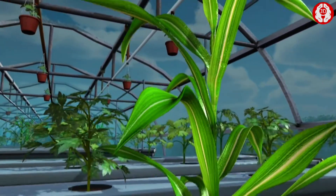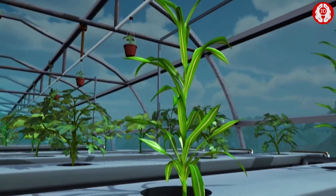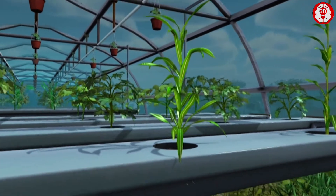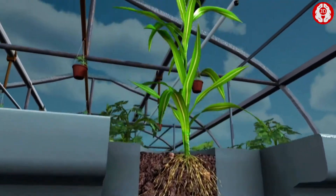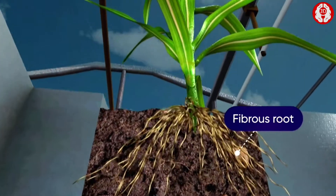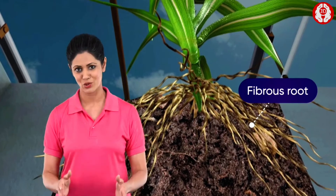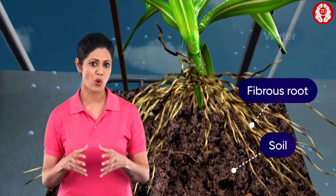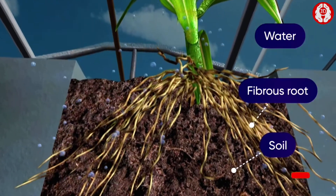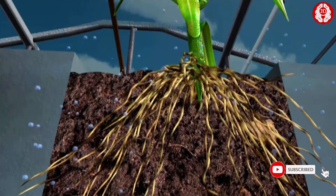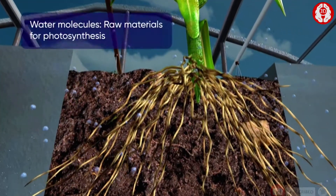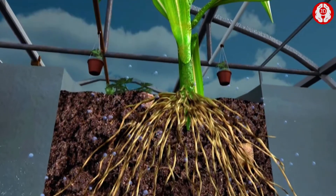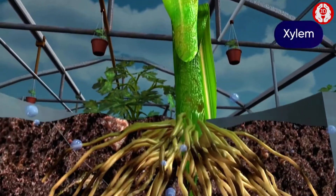Ever thought how this plant undergoes the vital process of growth? To seek an answer, we shift our attention to an underground system of fibrous roots which anchor the plant to the soil. These fine roots facilitate the plant to absorb water molecules from the soil. These water molecules, as important raw materials for photosynthesis, are transported from the roots through internal pipelines of specialized transporting tubes — the xylem.